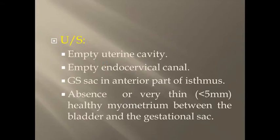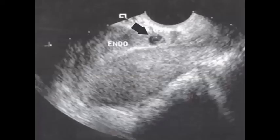The ultrasonographic criteria for diagnosis should fulfill the following. First, the uterine cavity or endometrial cavity should be empty. Also, the endocervical canal should be empty to differentiate it from cervical ectopic. There should be a gestational sac in the anterior part of the isthmus, with absent or very thin myometrium — less than 5 mm — separating the sac from the bladder.